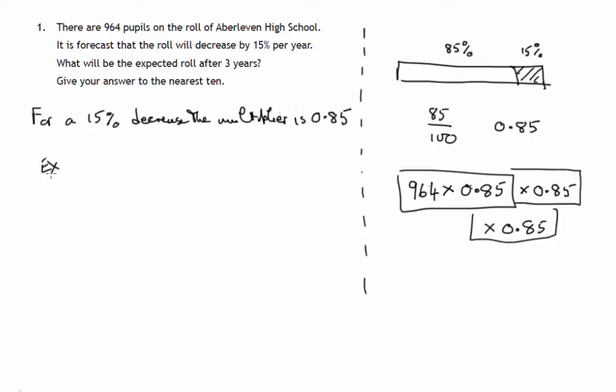The expected roll after three years will be 964 times 0.85, that's one year later. Another 85% of that, that's two years later.